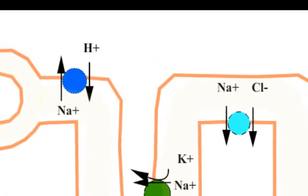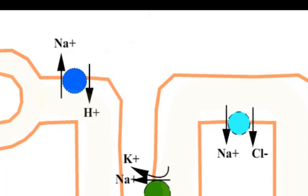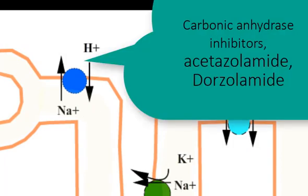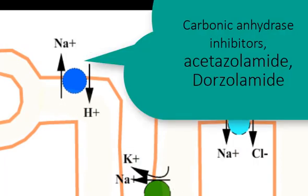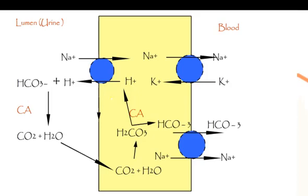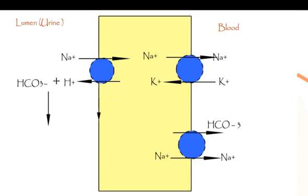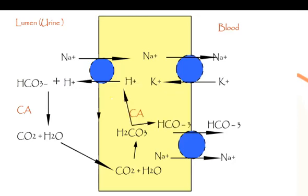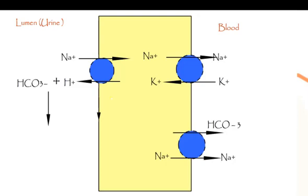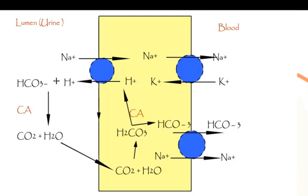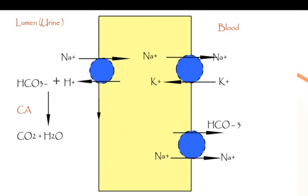The proximal tubule of the nephron is the site of action of carbonic anhydrase inhibitors such as acetazolamide and dorzolamide. Carbonic anhydrase catalyzes the reversible conversion of hydrogen ion and bicarbonate to carbon dioxide and water, thereby enabling the reabsorption of sodium bicarbonate. This process is inhibited by carbonic anhydrase inhibitors, leading to a corresponding increase in renal excretion of sodium bicarbonate and water.